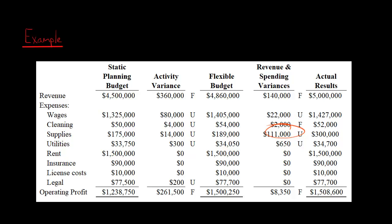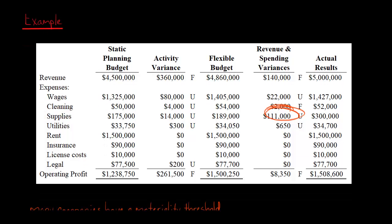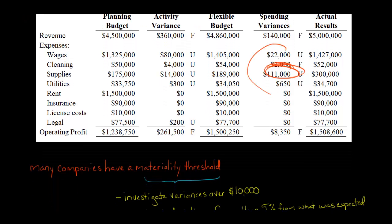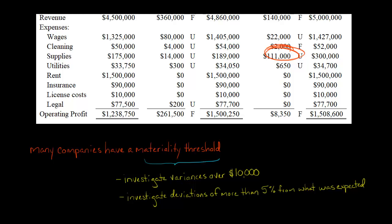So instead of looking into, for example, the unfavorable variance for utilities of $650, we immediately see — if our job is to control costs — that supplies should be our main focus. A lot of times companies will have some kind of threshold, because the $650 unfavorable variance for utilities probably isn't worth investigating. They could say we're not going to look into variances unless they're at least $10,000 or $25,000, or unless the deviation is at least 5% or 10% from what the company had been expecting.